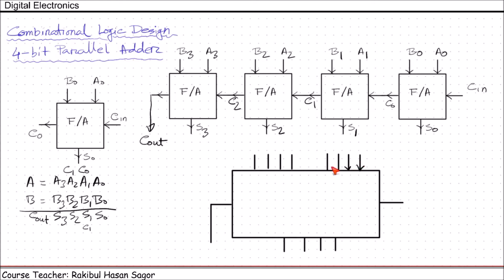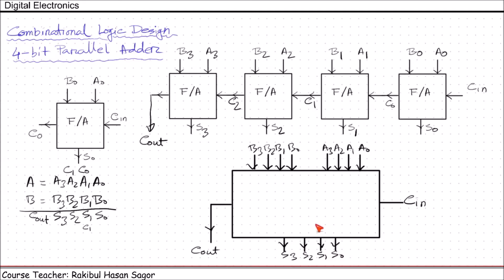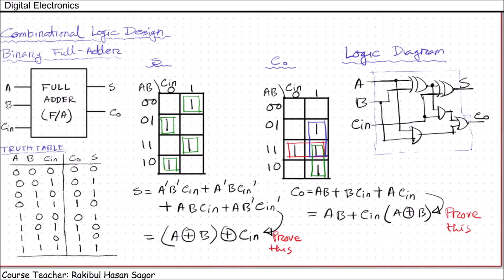The inputs are A0, A1, A2, A3 and B0, B1, B2, B3, with carry in. The outputs are S0, S1, S2, S3 — these are the four sum outputs — and a final carry out. This can be named as the 4-bit parallel adder. Inside the box we have four full adders, and inside each full adder box is the logic diagram we already designed.